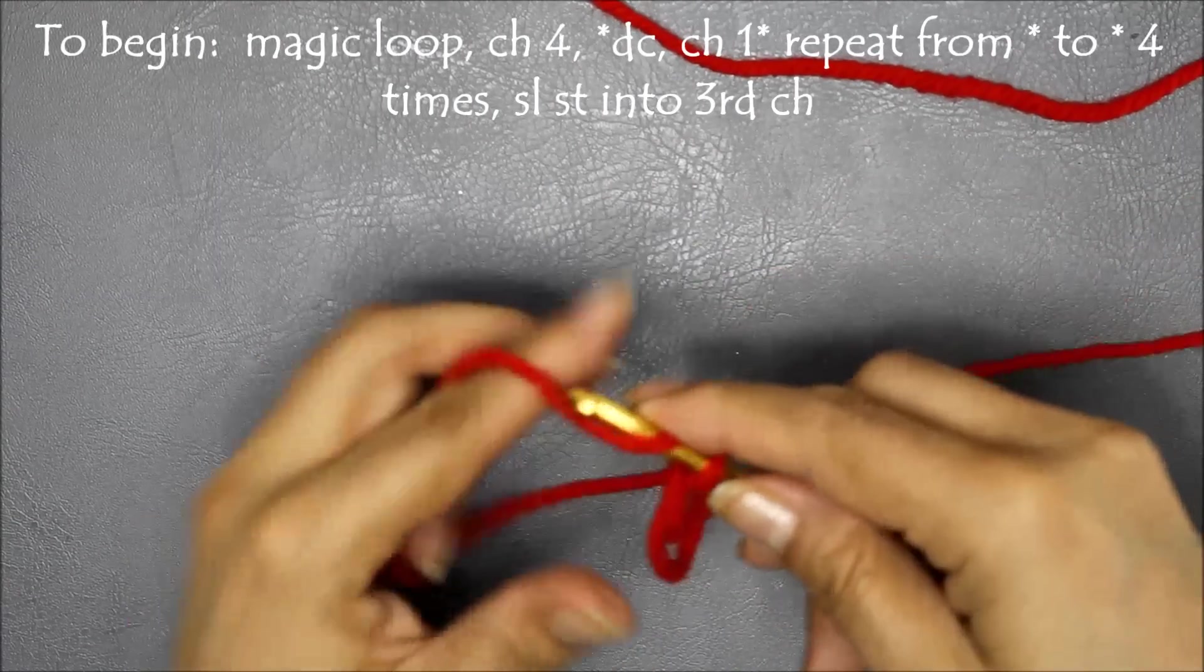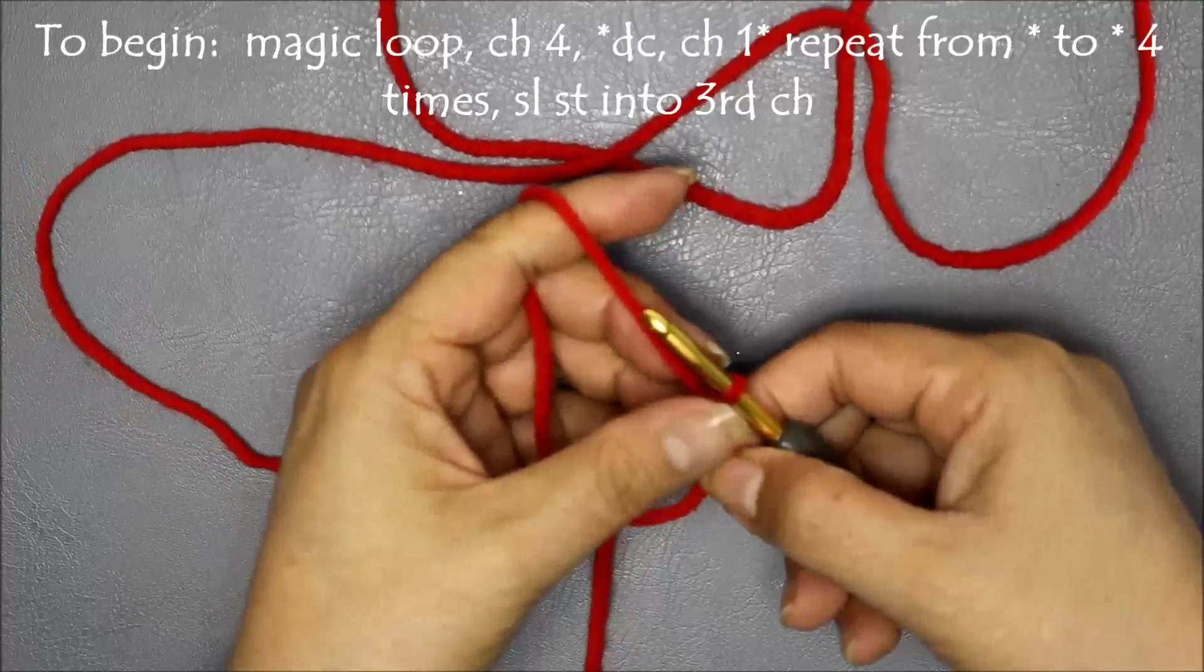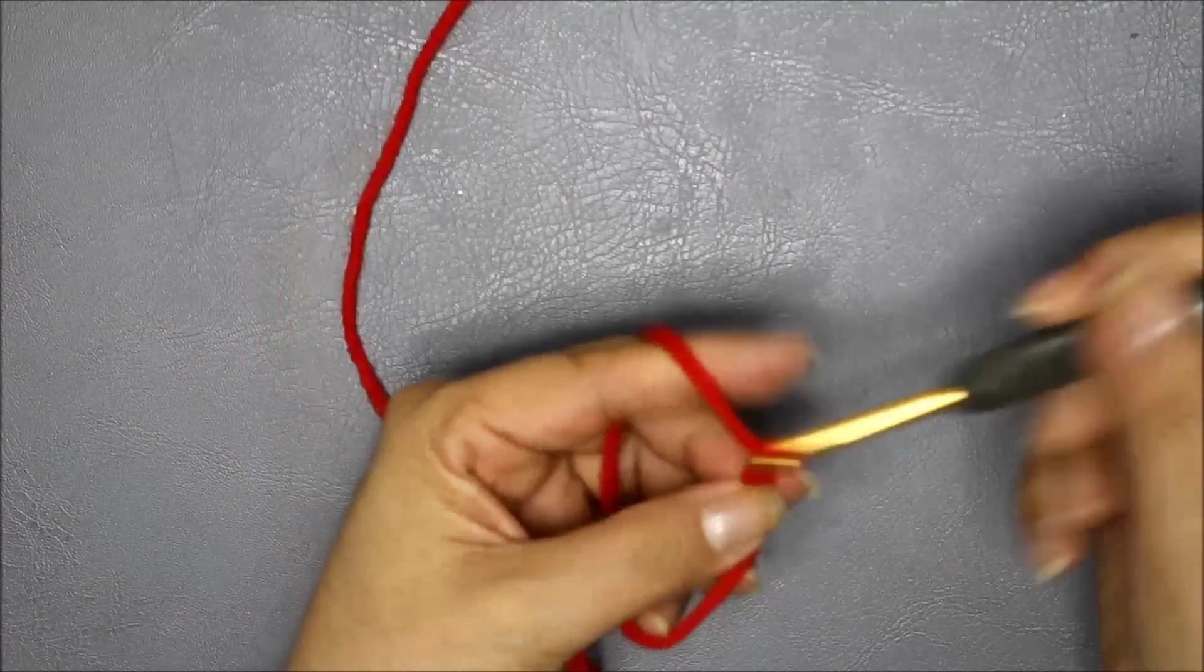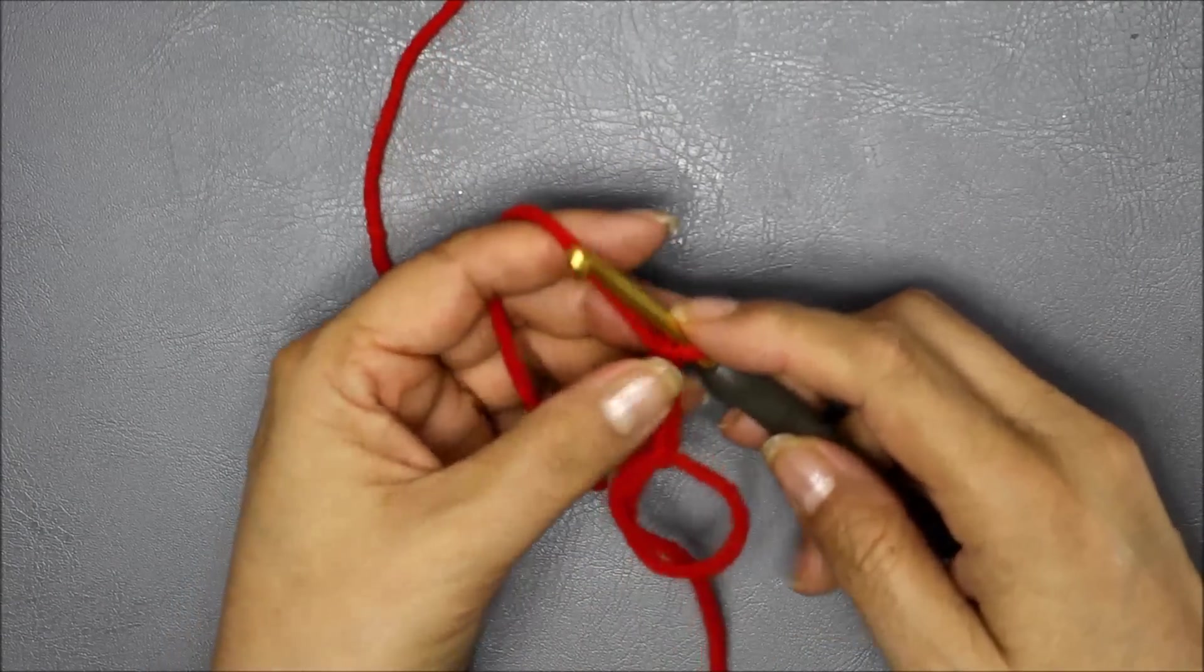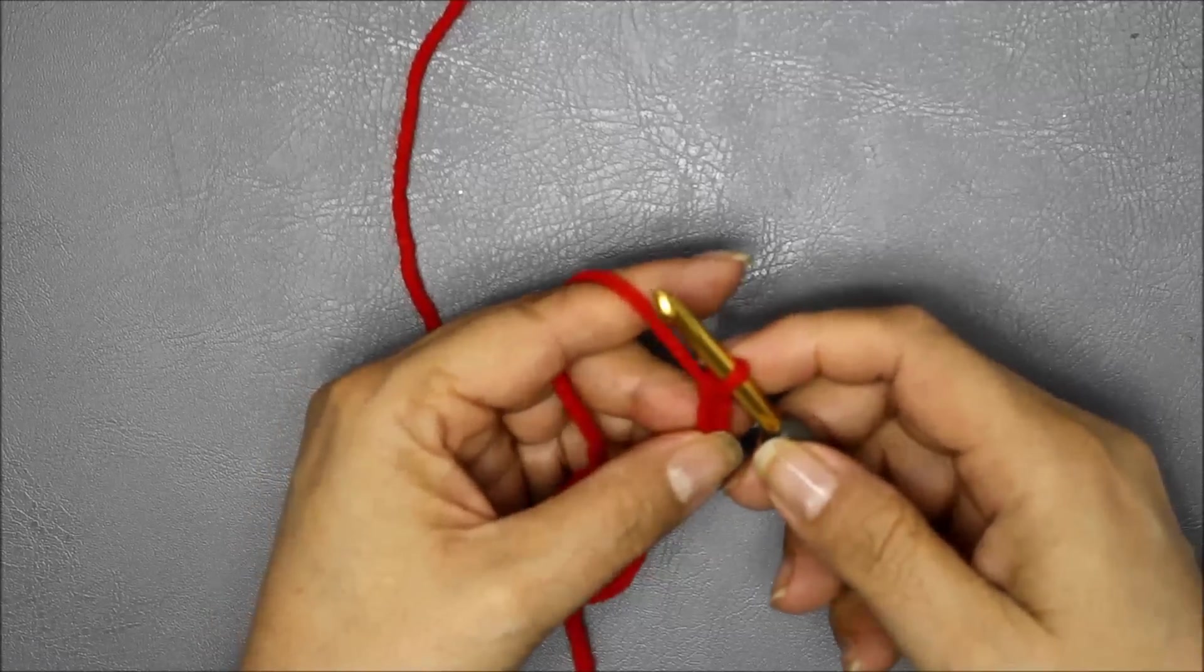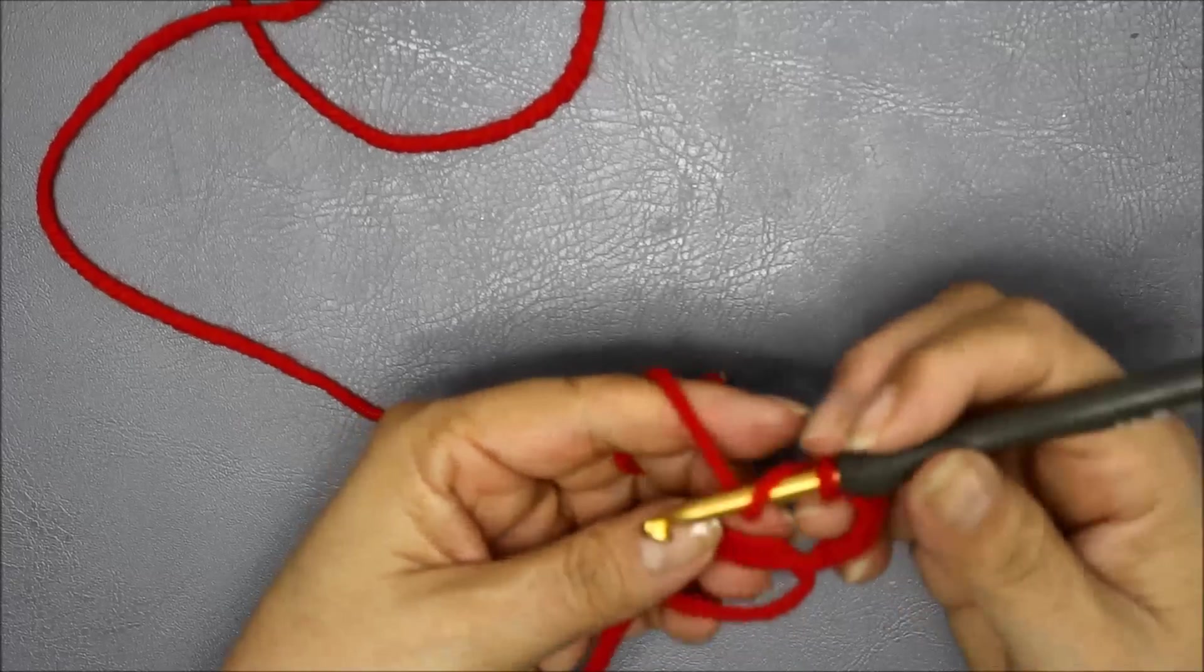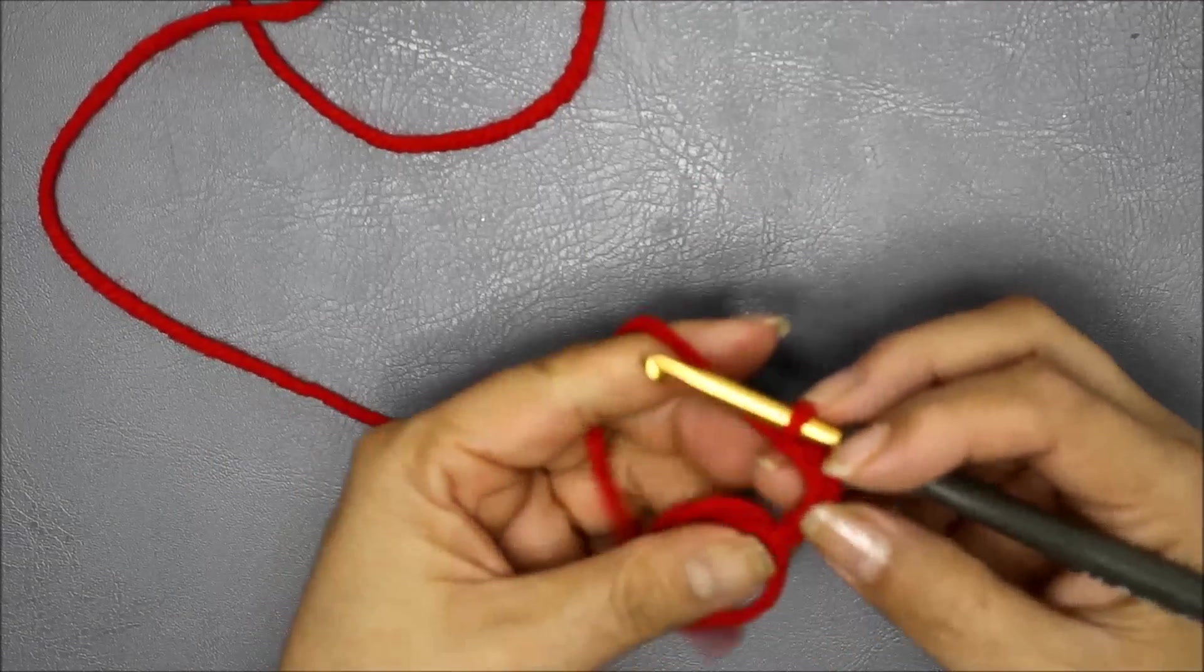So here we go. I'm going to chain three. One, two, three, this is counting as my first double crochet and then I'm going to chain one more because it's going to be a separation stitch, and then I'm going to do the following double crochet, chain one five times.